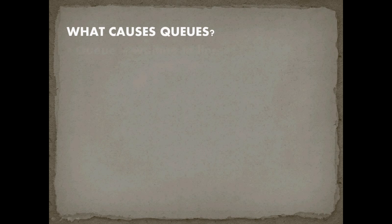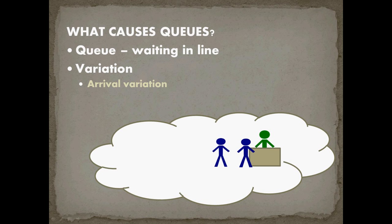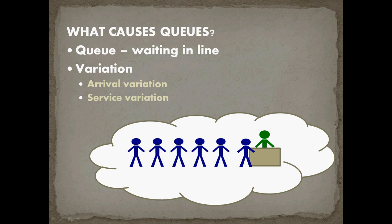So what causes a queue? A queue is waiting in line, and it's caused by variation. We can have variation in arrival — when two people arrive right behind each other, all of a sudden there will be a line even if the service rate is fairly quick. Sometimes two people arrive almost simultaneously. The other factor is service variation — some customers may be more difficult to process than others, whereas others will go very quickly.